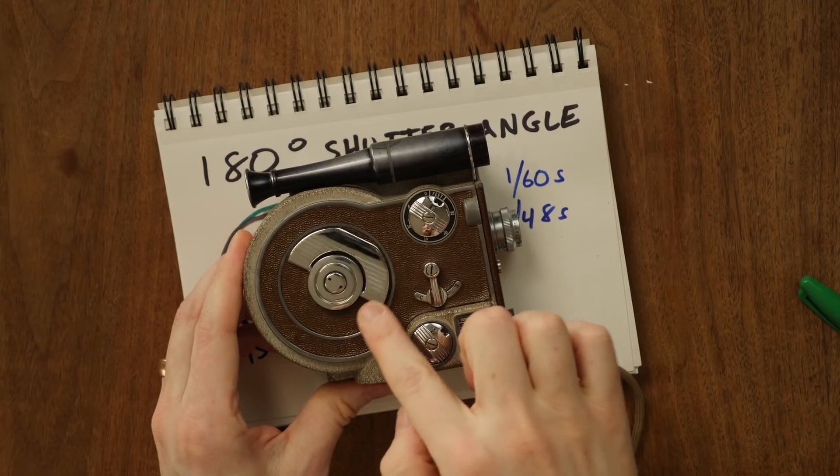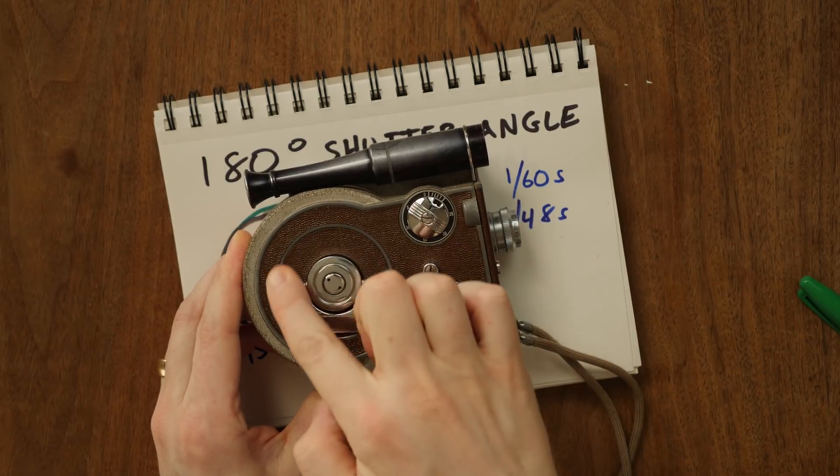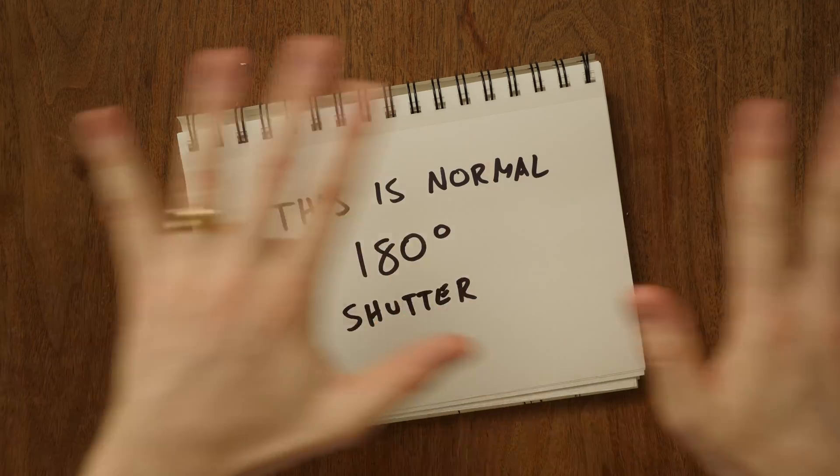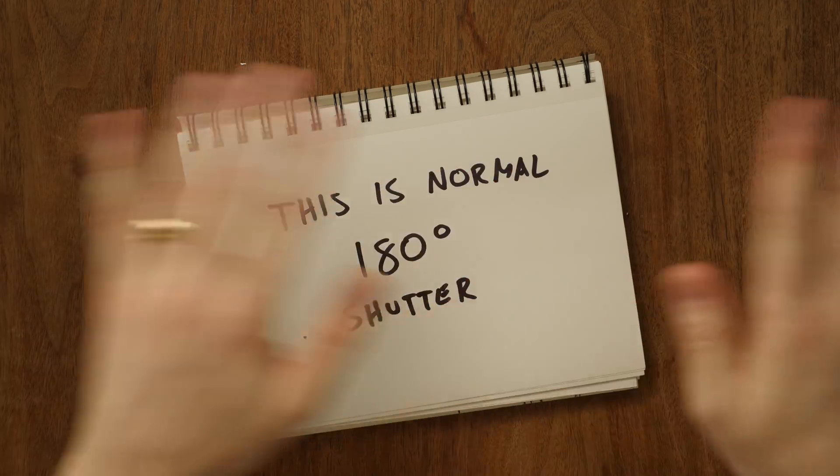So why is a 180-degree shutter considered normal? The first motion picture cameras had a rotary shutter spinning inside — a semicircle that would cover up the film for half of each frame. We got accustomed to that level of motion blur. It just looks cinematic.